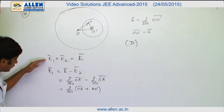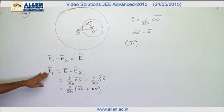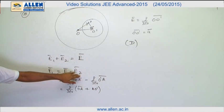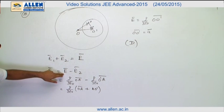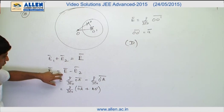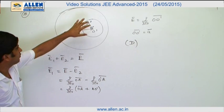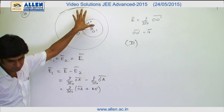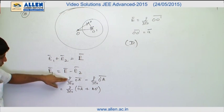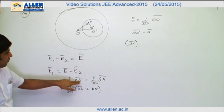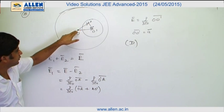From this equation, we get that E1 equals to E minus E2. Value of E can be found out using the formula rho by 3 epsilon naught R. Since E is the electric field intensity due to the complete sphere, we will write that rho upon 3 epsilon naught OA vector, where OA vector is shown in the diagram.